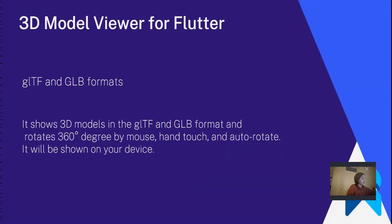That was the first package. The second package for 3D objects is the Model Viewer package. We will implement the Model Viewer package to show 3D models in the GLTF and GLB formats in a Flutter application. The Model Viewer package shows 3D models rotating 360 degrees by mouse and hand touch. As for the file formats — GLTF, GL Transmission Format, is an open format specification for efficient delivery and loading of 3D content. GLB files can be used to save and share digital assets between different 3D modeling tools.